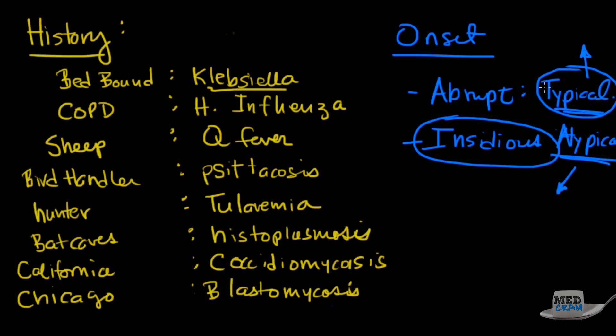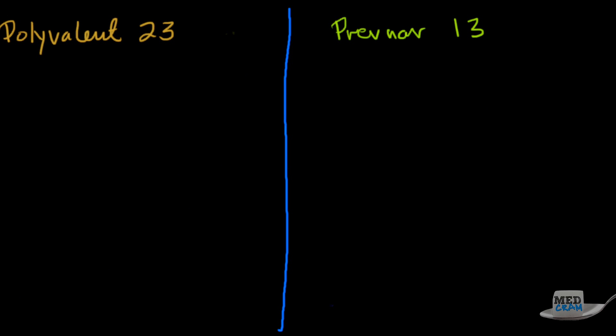Now the typical organism, as you'll know, is the Streptococcal pneumoniae. That one has actually gone down quite a bit in the last few years, and that's because of what's been going on with the vaccine. So let's talk about that a little bit. There are two different vaccines in the United States that we're using currently. It's the Polyvalent 23, which has been around for some time, and the Prevnar 13. Polyvalent 23 is also known as the PPSV23, and the Prevnar 13 is also known as PCV13.